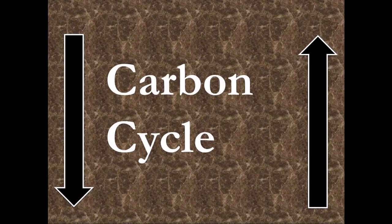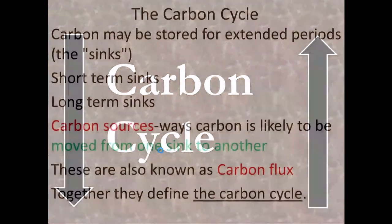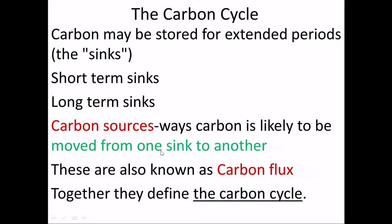In this video, we're going to talk about the carbon cycle and short and long-term carbon sinks. Carbon can move from one sphere to another sphere — from the hydrosphere to the geosphere to the atmosphere to the biosphere. That movement from one place on Earth to another is what we call the carbon cycle.